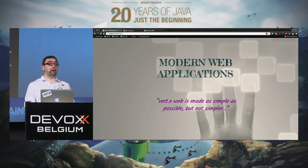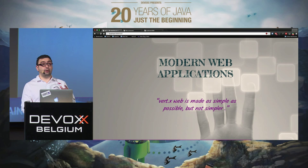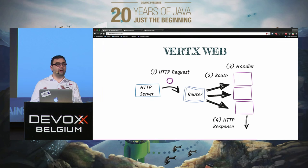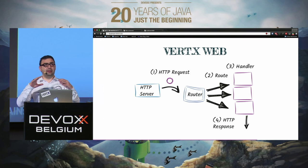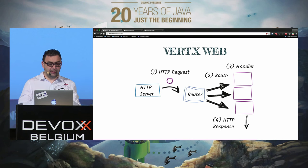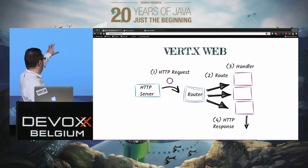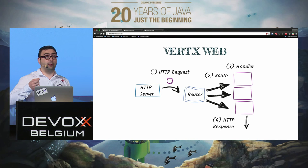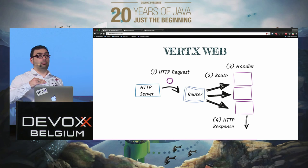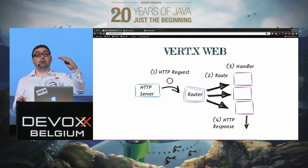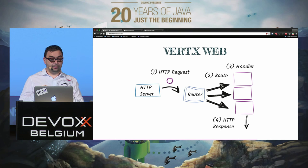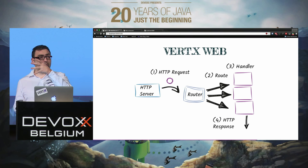The second major component is Vert.x Web — a framework for sophisticated, modern web applications in an async fashion. We have an HTTP server, we associate a router from Vert.x Web, and declare a set of routes. When a GET request arrives on a path, call this handler; when a POST request arrives, do that. When an HTTP request comes in, the router finds the matching route, calls the handler, and the handler writes the response.